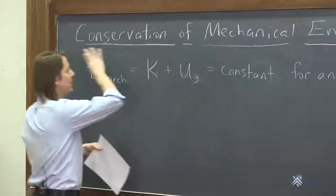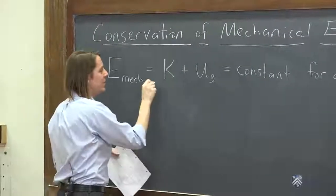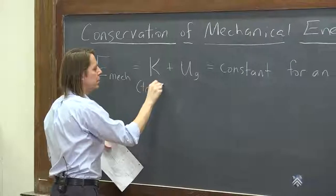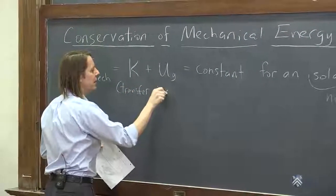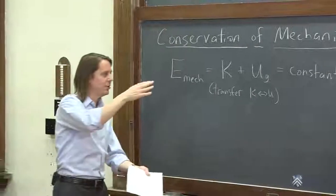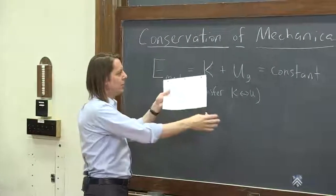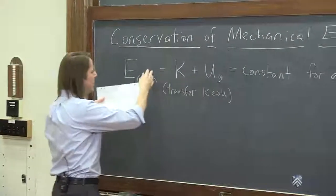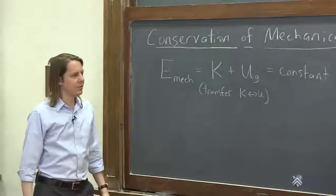And while we say constant, we mean this part, the whole thing is constant. So you can transfer between K and U. So in your system, you can have the potential increase and decrease. The kinetic can increase and decrease. But their sum is equal to the mechanical energy, and it's constant.